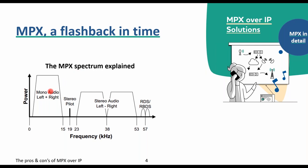For those new to MPX, let's take a closer look at the MPX signal. The left side shows the frequency range 20 Hz to 15 kHz, which is reserved for mono audio. A bit to the right you will notice the stereo pilot, modulated as a 19 kHz carrier. Between 23 and 53 kHz the left-minus-right audio component is placed. When your radio detects the stereo pilot it processes the mono signal and demultiplexes it with the left-minus-right audio component. Your car radio then switches to stereo mode.